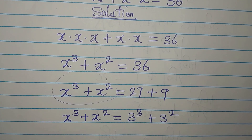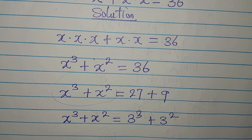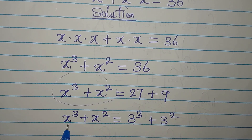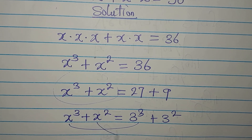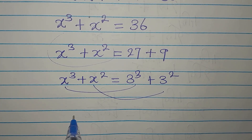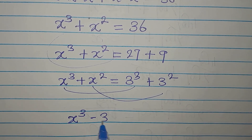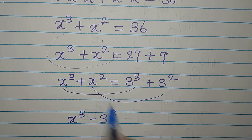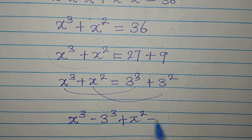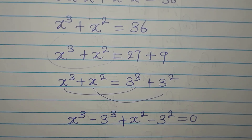Now look at the left-hand side and the right-hand side — can we see any resemblance in form? Yes, the cubic terms go together and the square terms go together. So we pick x to the power of 3 minus 3 to the power of 3, then plus x squared minus 3 squared, and equate to zero.